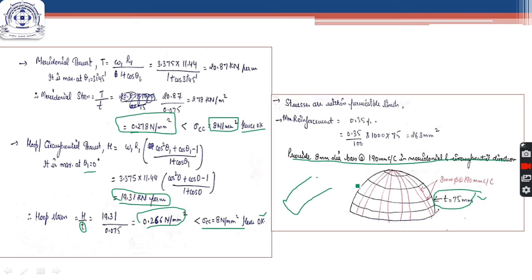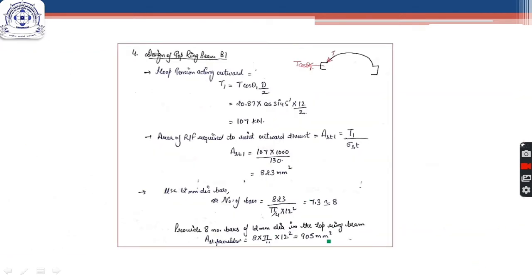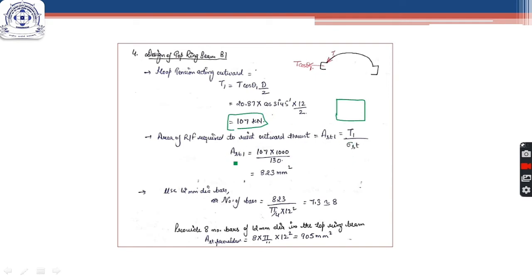The design of the top dome is complete. We now move on to the top ring beam. The top ring beam is designed for the outward component of the meridional thrust, which is T·cos θ1. The hoop tension due to this outward component is T·cos θ1 × d/2, where θ1 is the semi-vertical angle of the top dome. This comes out to 107 kN. The reinforcement is calculated based on this hoop tension.